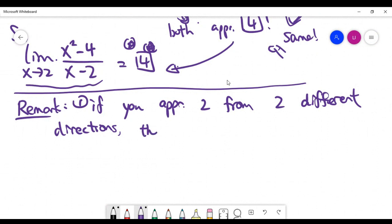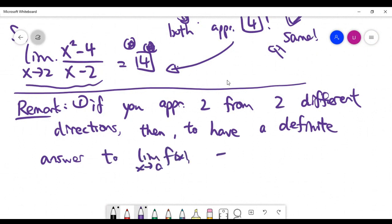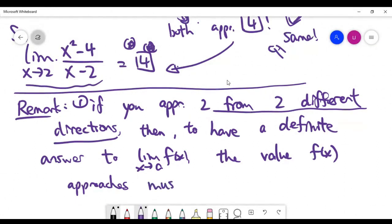It essentially means that to have a definite answer to the limit problem, the value f approaches from two different directions must be the same.